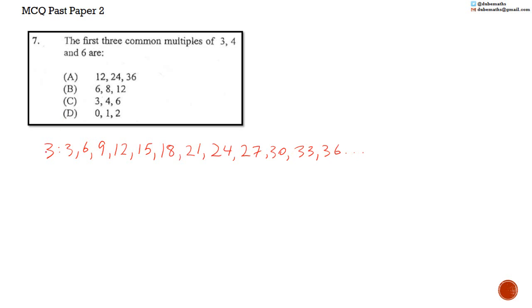The multiples of 4 are 4, 8, 12, 16, 20, 24, 28, 32, 36, and so on. We see that the only common multiples of 3 and 4 are 12, 24, and 36.